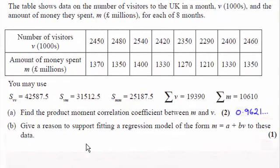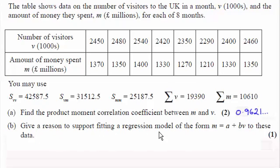Hi. In part A we're asked to work out the product moment correlation coefficient between M and V, and we found it to be 0.9621. For this part, we're asked to give a reason to support fitting a regression model of the form M equals A plus BV to these data.